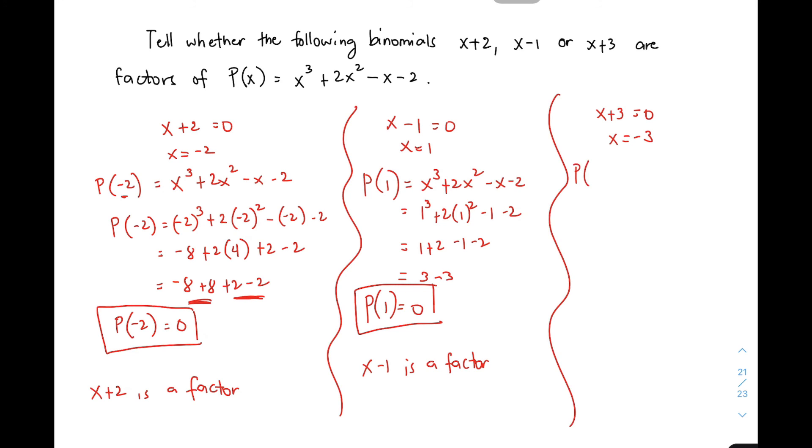So gawin natin, p of negative 3 is equal to x cubed plus 2x squared minus x minus 2. So palitan natin lahat ang x ng negative 3. Negative 3 cubed plus 2 times negative 3 squared minus negative 3 minus 2. So this is negative 27 plus 2 times 9 plus 3 minus 2.